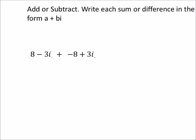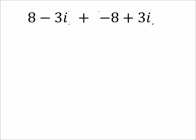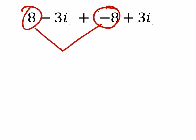And now I'm just looking to combine like terms. For example, I have this 8, which does not have an i, and I have this negative 8 also, which does not have an i. So they're like terms. So when I combine these two, 8 plus a negative 8, as it turns out, is 0.